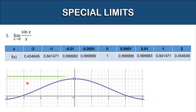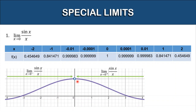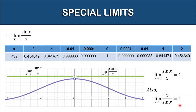As we can see, here are the values of x approaching zero from the left — this is the one-sided limit from the left of zero. On the other hand, here are the values approaching zero from the right. By evaluating the limit, the limit of sine x over x as x approaches zero is equal to 1. Also, the limit of x over sine x as x approaches zero is also equal to 1.